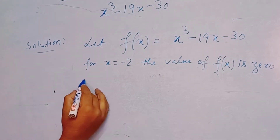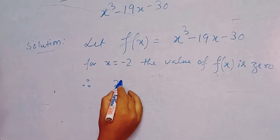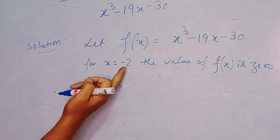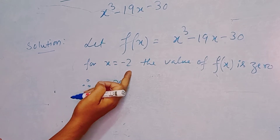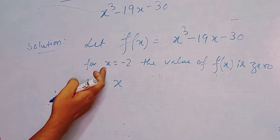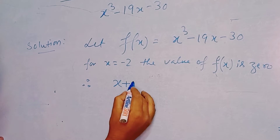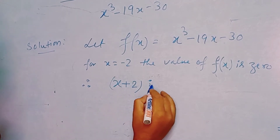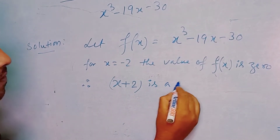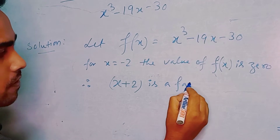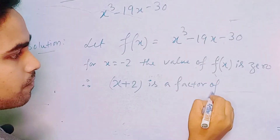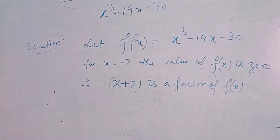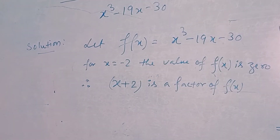Therefore, if we take minus 2 to the left-hand side, it becomes plus. So x plus 2 is a factor of f(x).